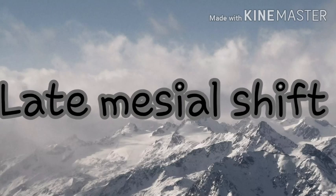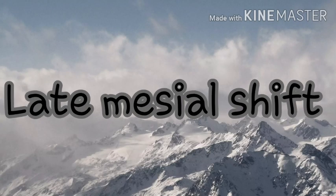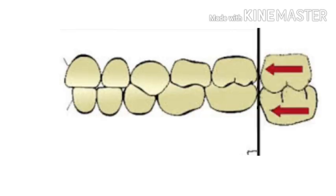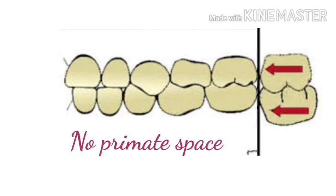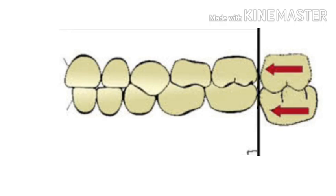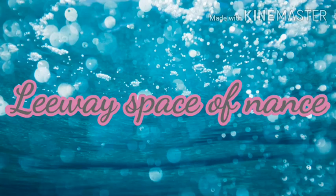Late mesial shift occurs in the late mixed dentition period, after the eruption of permanent canines and premolars. In some cases, when primate spaces are absent, the permanent first molar drifts mesially by utilizing the leeway space of Nance.